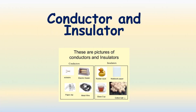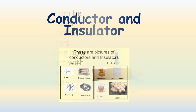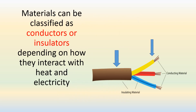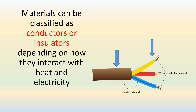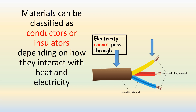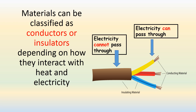Conductor and Insulator. Materials can be classified as conductors or insulators depending on how they interact with heat and electricity. As shown in the picture, the rubber cover of the wire is an example of an insulator, and the copper inside of it is called a conductor.